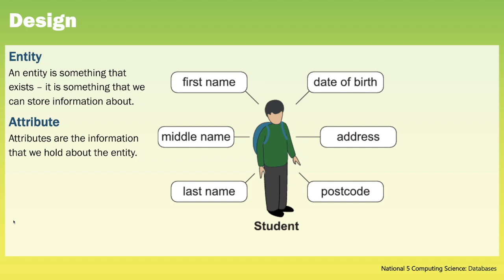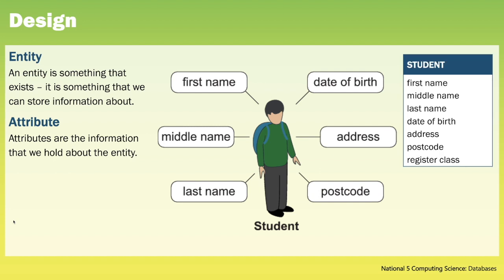When we're designing our database we think of entities and attributes. In database design entities represent what will become tables during implementation. An entity could be a physical object, for example a book or a person, or something abstract like a hairdressing appointment or holiday details. The example on screen of an entity is a student. Attributes are the information that we hold about the entity and during implementation these will become the fields. So we are holding the first name, last name, date of birth, address and postcode of our student. We can also describe our entities and attributes in a table like this.